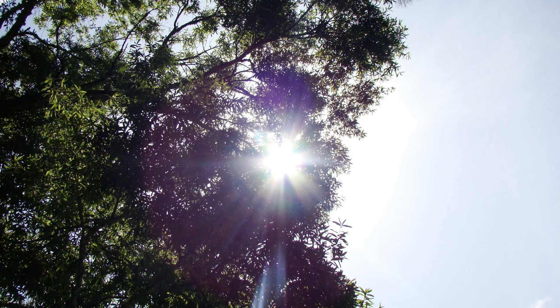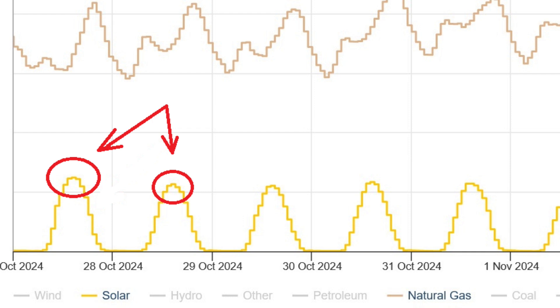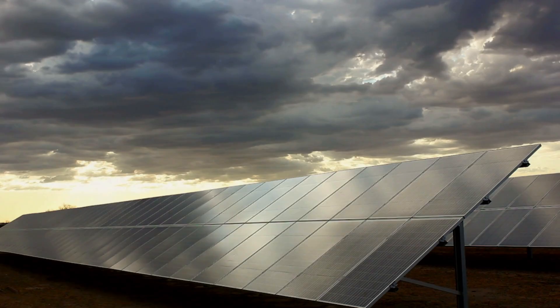In reality, solar power only generates a meaningful, grid-supplying amount of energy for about four hours per day — with maybe one to two extra hours on each side as output climbs up or falls off. And that is assuming clear skies with zero cloud cover whatsoever. It's also assuming summer, because of the earth's axial tilt.